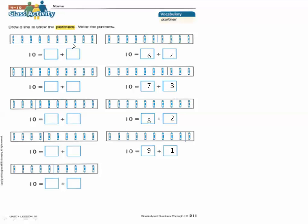Here in each box we have ten cranes. In the first one we will draw a line after one crane. Then count how many cranes we have before this line — here we have only one, so we will write one in the left square. After that we will count the rest of the cranes that come after this line.